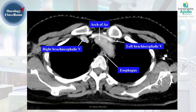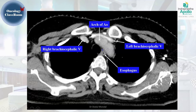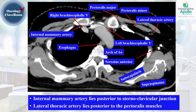Going slightly caudal along the arch of aorta, we can also see the internal mammary artery, which arises from the subclavian artery and lies posterior to the sternoclavicular junction. This is the sternum and this is the clavicle; gradually this internal mammary artery will come forward. We can also see the right brachiocephalic artery and the left brachiocephalic vein crossing the midline to the opposite side.